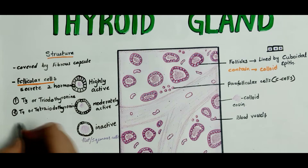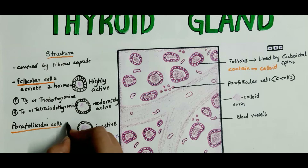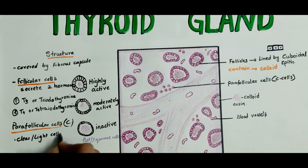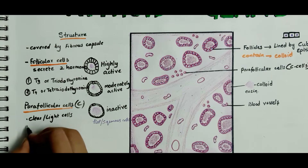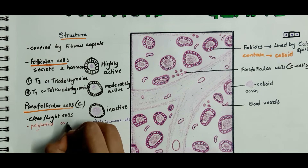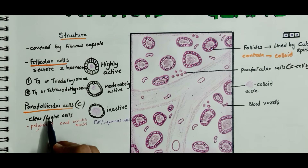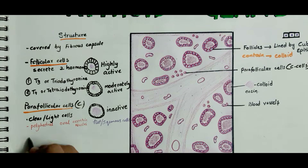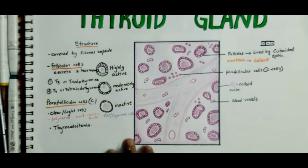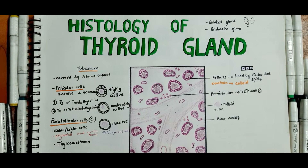Coming to the parafollicular cells, also called C cells or clear cells, they are polyhedral with oval eccentric nuclei. The parafollicular cells or C cells produce the hormone thyrocalcitonin. This hormone has the action opposite to the parathyroid hormone on calcium metabolism. That is all about the histology of the thyroid gland. If you like the video, please subscribe to my channel and suggest topics on which I can make videos.